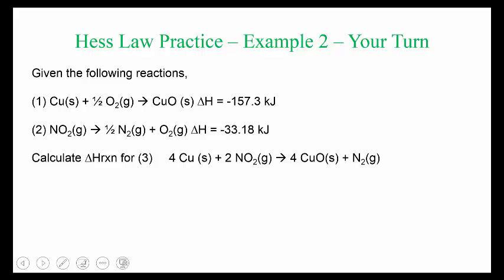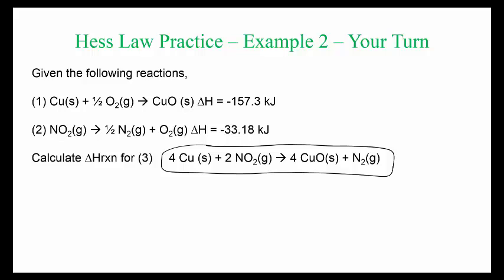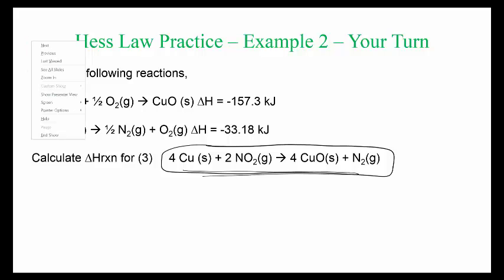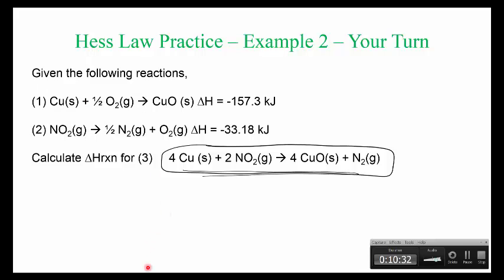The next problem is for you to try, and I'll end the tutorial here. A couple of take-home pointers: keep looking at the target reaction and ask which species do not appear there — that tells you whether to reverse a reaction or not. Also watch the coefficients: if you have four of a species in the target but only one in an elementary step, you'll need to multiply. Good luck, and that's the end of the tutorial.